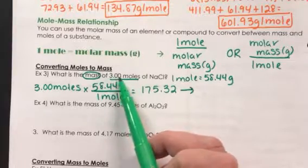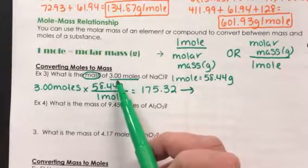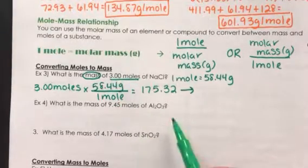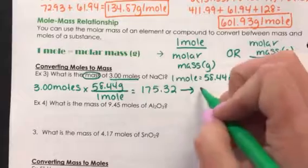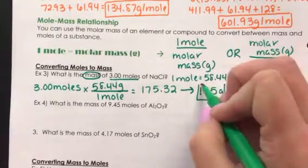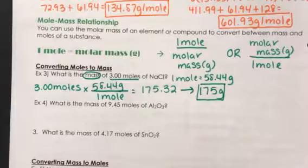These zeros are significant because they're at the end of a number and after a decimal point. So this has one, two, three significant figures. So my answer should be rounded to three significant figures. So the answer is 175 grams.